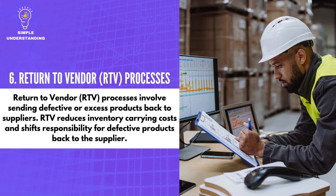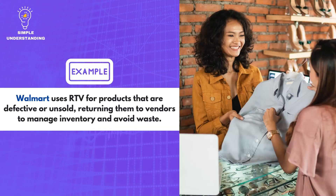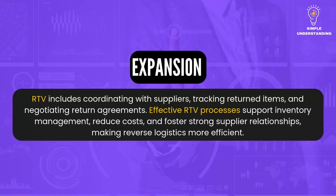6. Return to Vendor (RTV) Processes. Return to Vendor RTV processes involve sending defective or excess products back to suppliers. RTV reduces inventory-carrying costs and shifts responsibility for defective products back to the supplier. Walmart uses RTV for products that are defective or unsold, returning them to vendors to manage inventory and avoid waste. RTV includes coordinating with suppliers, tracking returned items, and negotiating return agreements, supporting inventory management, reducing costs, and fostering strong supplier relationships.